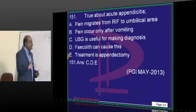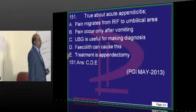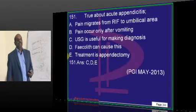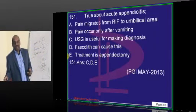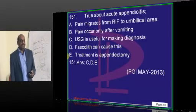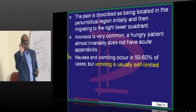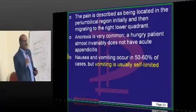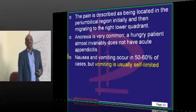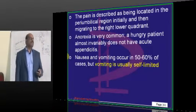Acute appendicitis — ultrasound is used to make the diagnosis. Generally, don't call for CT scan. A faecolith can lead to it and you will treat it by appendicectomy. How will the pain migrate? Periumbilically it will start and it will go to the right iliac fossa — not right iliac fossa to periumbilical. Anorexia is the most consistent clinical symptom of appendicitis. If the patient says they are hungry, then it is unlikely to be appendicitis.